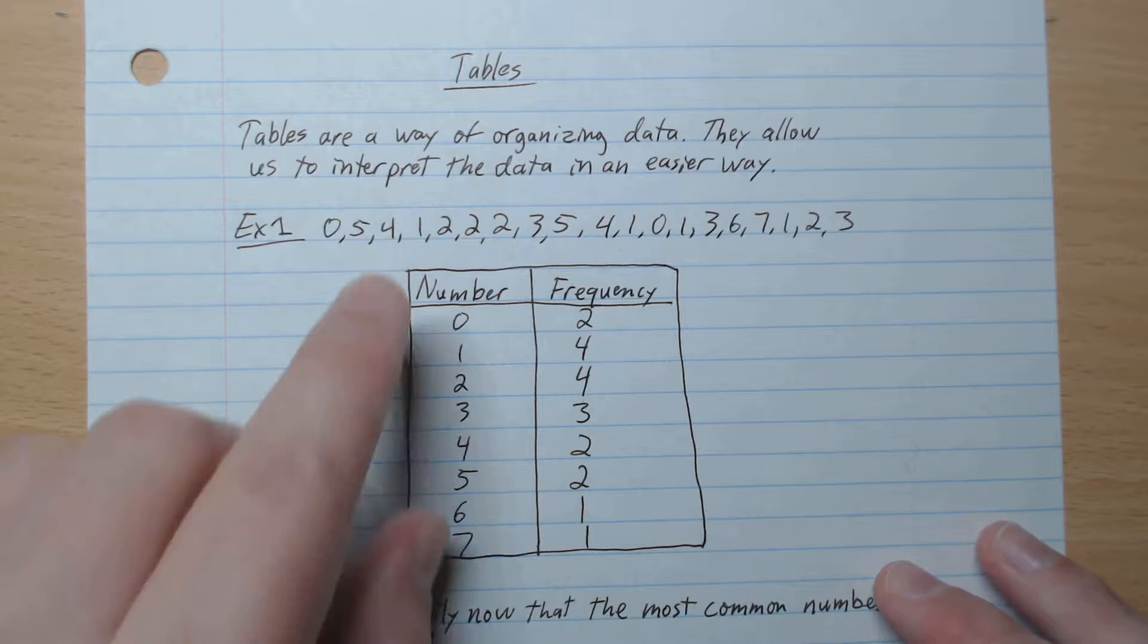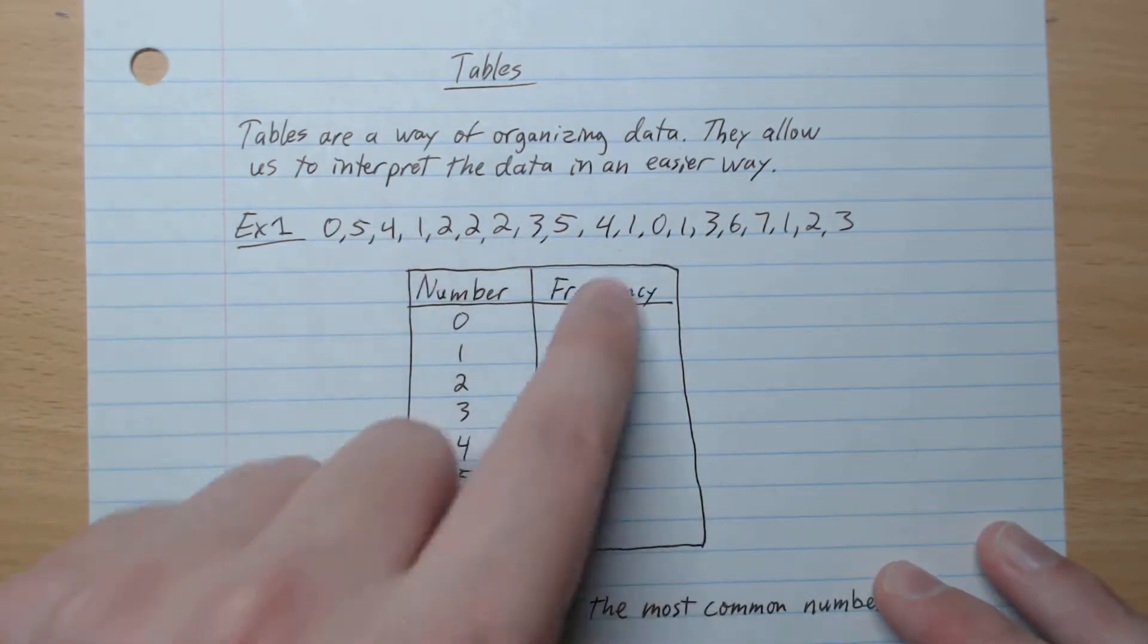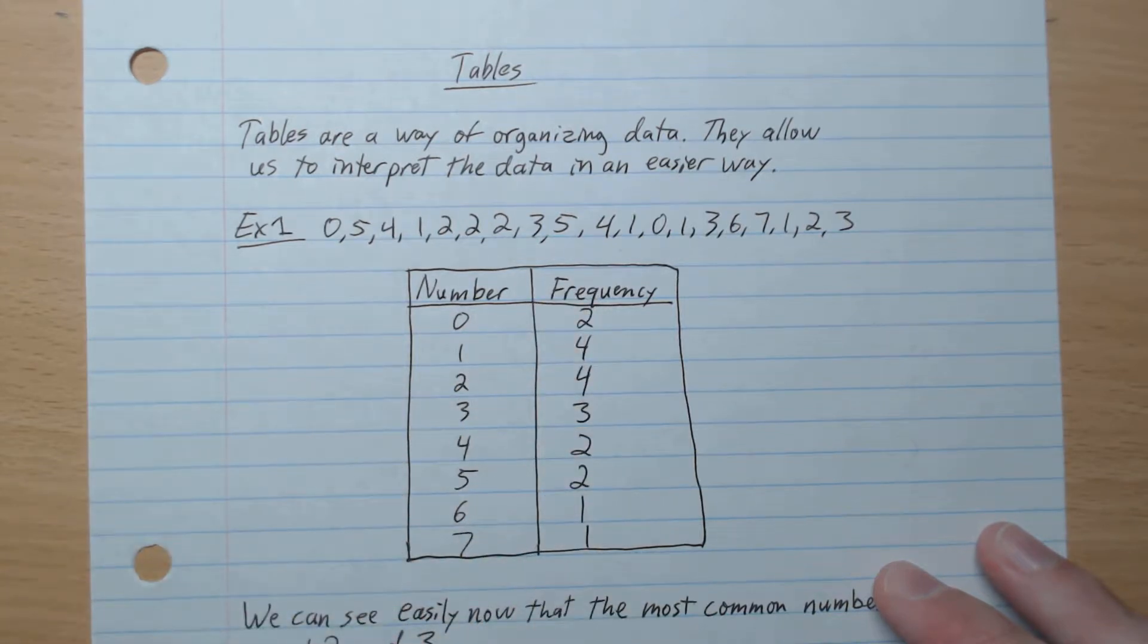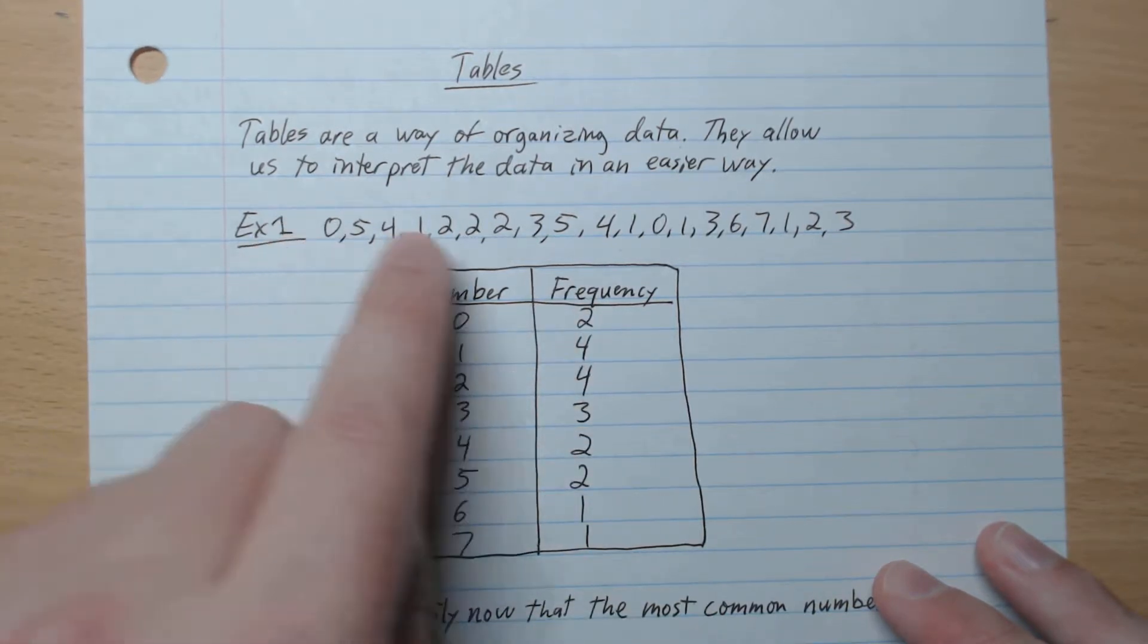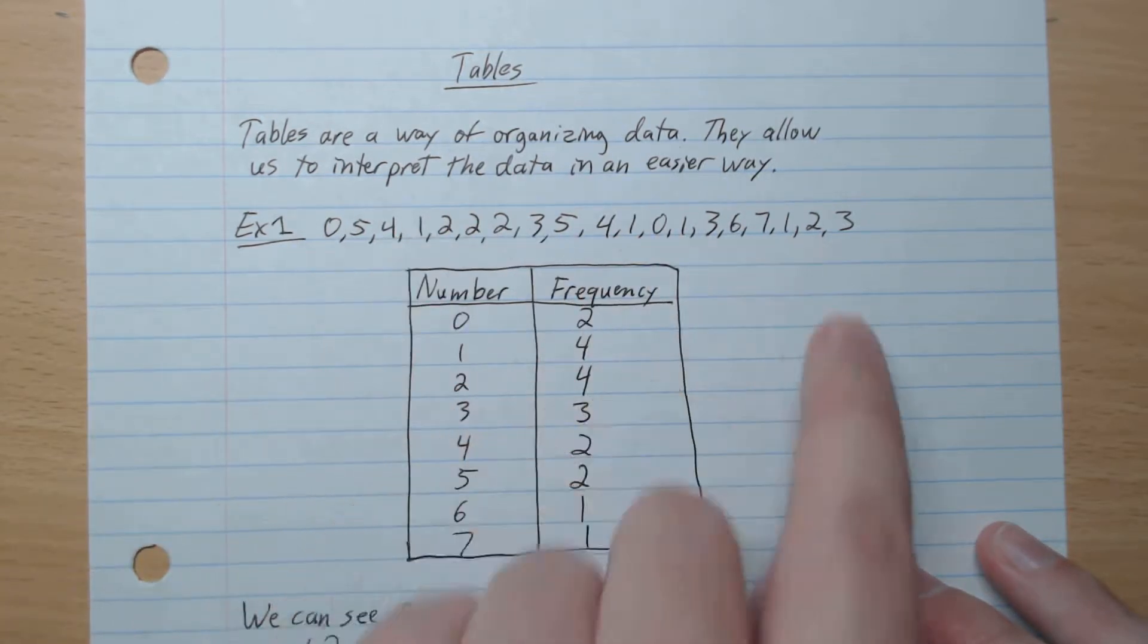Example number 1. We have a list of numbers here. We can create a table that has each number and what frequency. How often does it appear? Number 0 appears 1, 2 times like that. Number 1 appears 4 times like that.